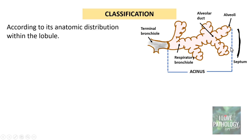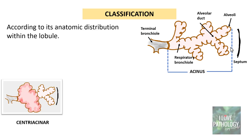Understanding this anatomic distribution makes it easy to understand the classification of emphysema. In centriacinar emphysema, the proximal part of the respiratory tree distal to the terminal bronchiole is dilated — specifically the respiratory bronchioles — while the distal part is spared.